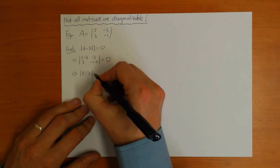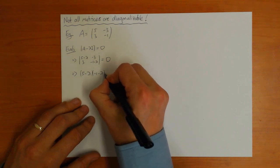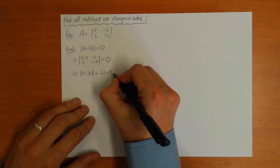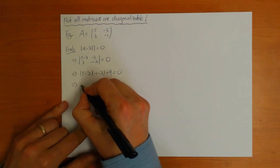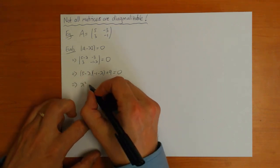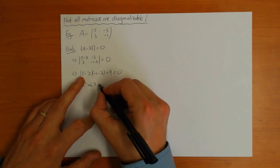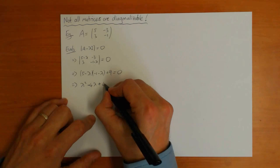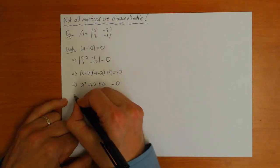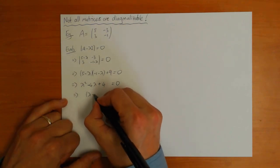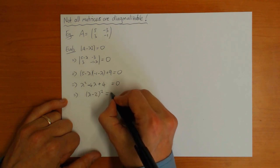5 minus lambda times minus 1 minus lambda plus 9 is 0. Lambda squared minus 4 lambda plus 9 minus 5, that's plus 4, is equal to 0.